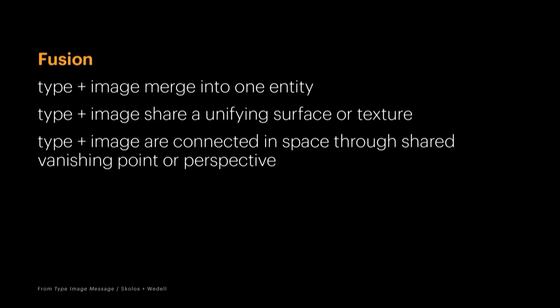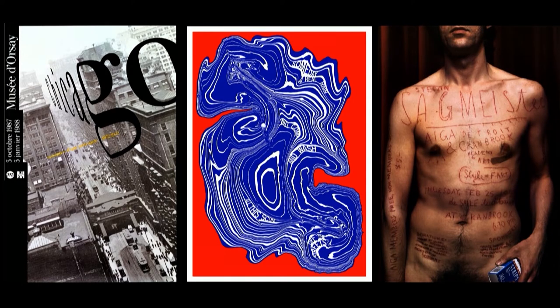The third one is fusion. This is where they merge into one entity — they fuse to the surface, so they share a surface or a texture, or might even be connected through space. On the left is a famous poster by Philippe Apeloig, creating the same perspective with the typography. The middle one has letter forms being affected by the shapes and lines in there. And you can't get much more fused than Stefan Sagmeister's poster where his intern actually etched the letters onto him with an exacto blade — that's fused on the skin literally.